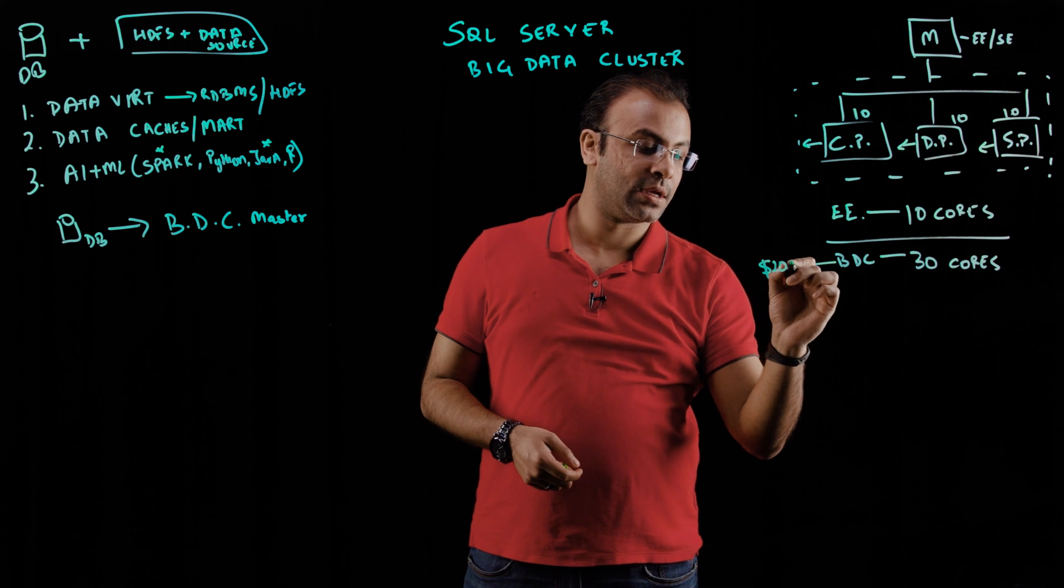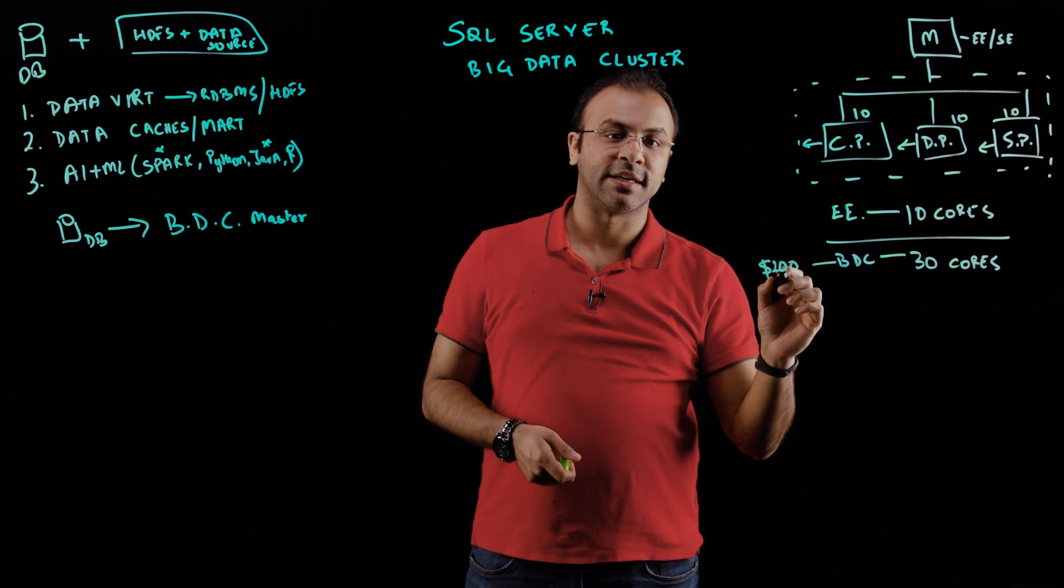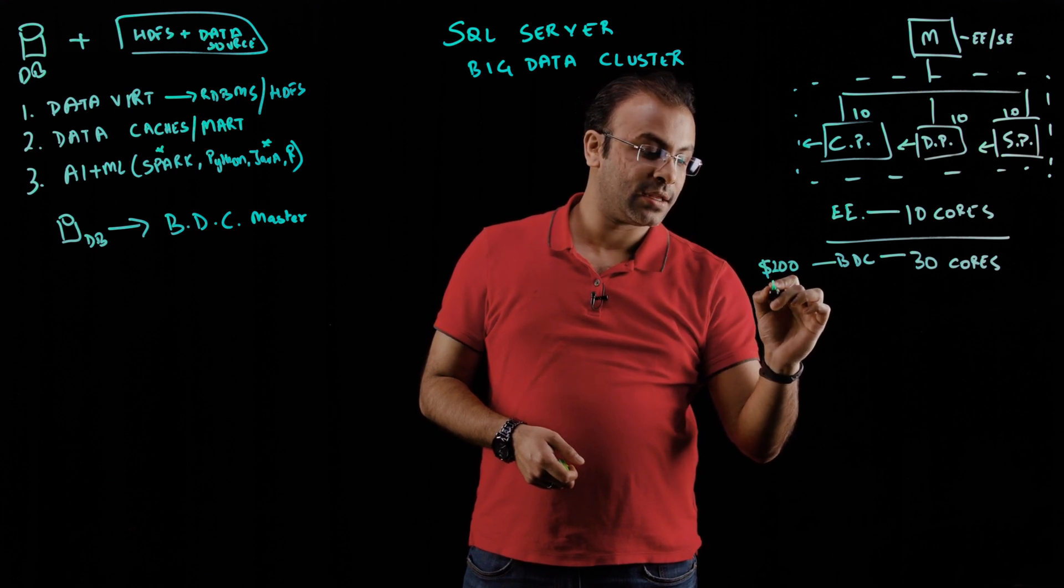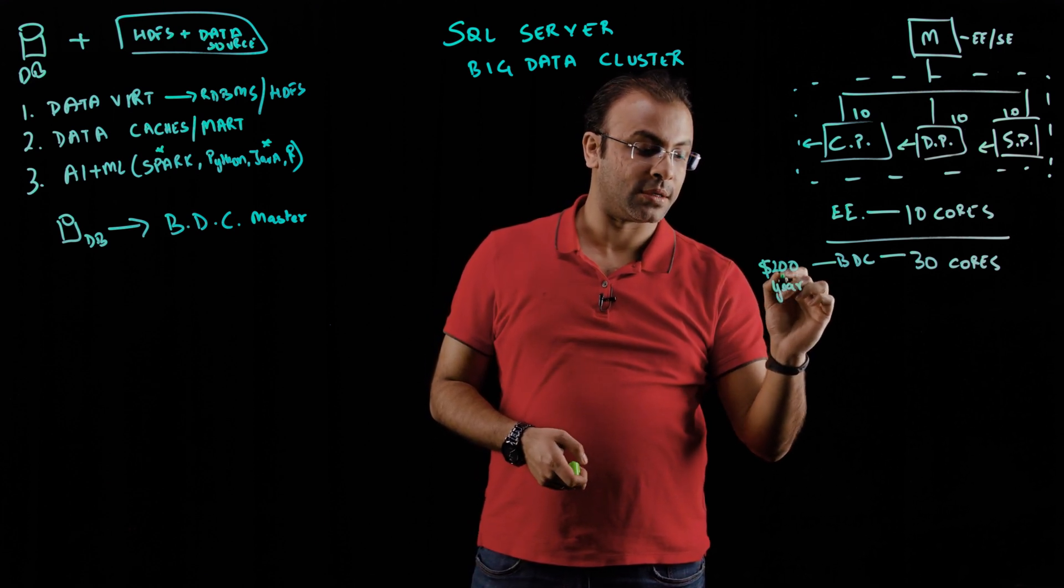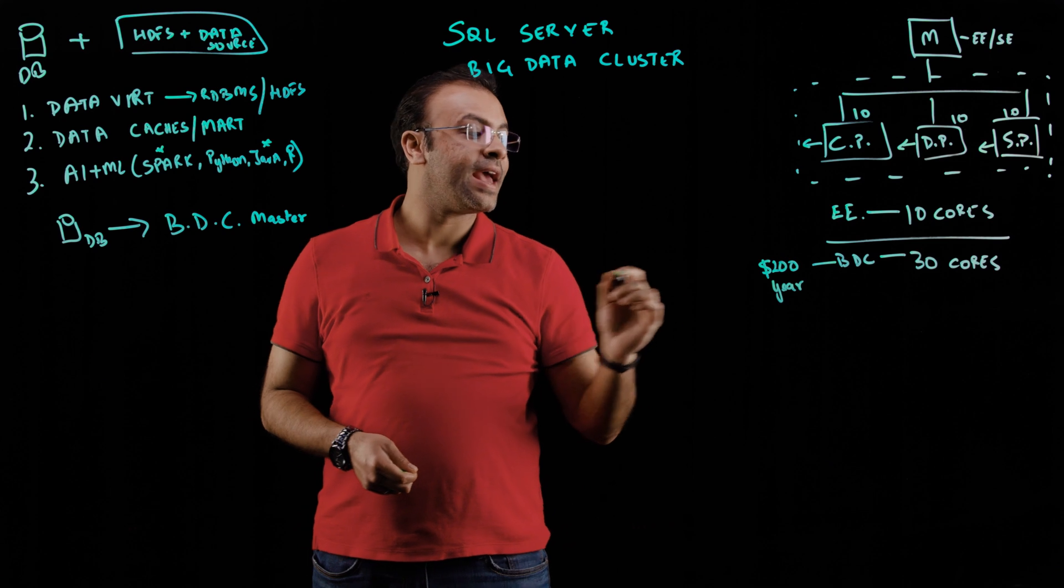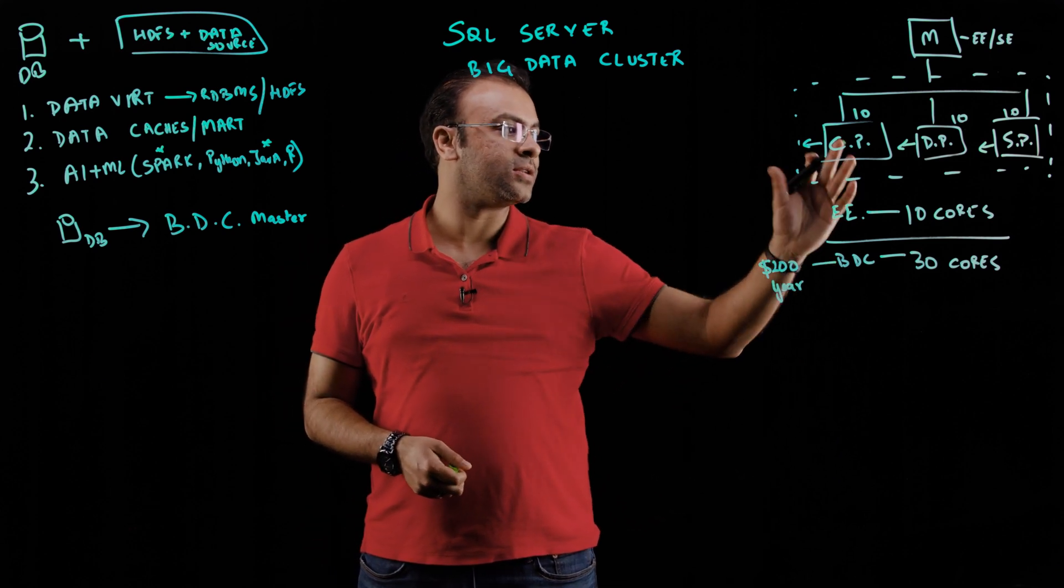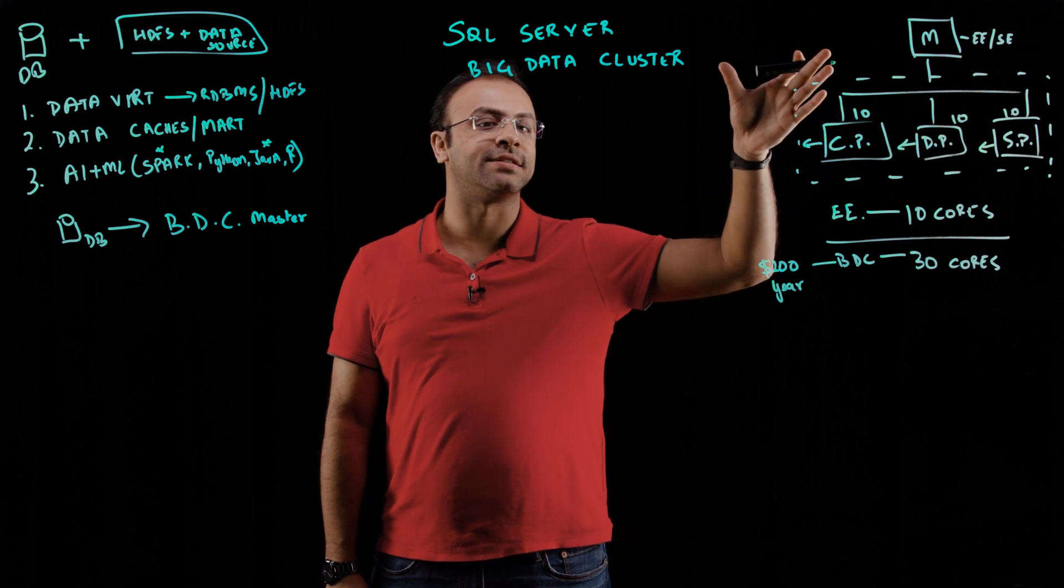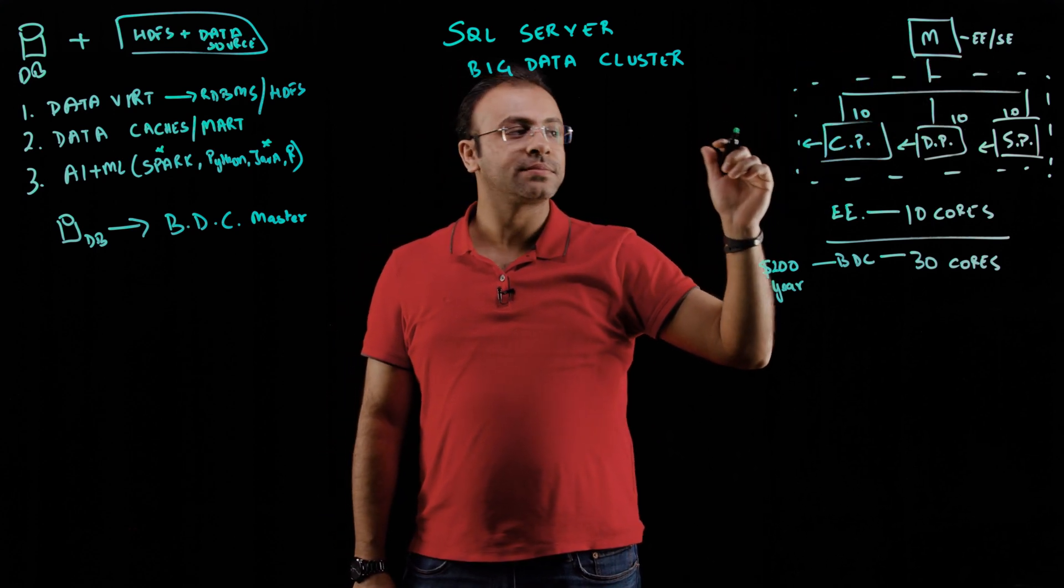Each big data cluster node is licensed by cores, and each big data cluster core is licensed at $200 per year. What that does is it allows you to scale out your big data cluster environment or your master environment separately. Now, what happens when you do something like a data cache and you need to expand?